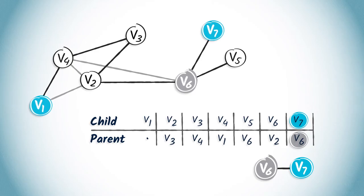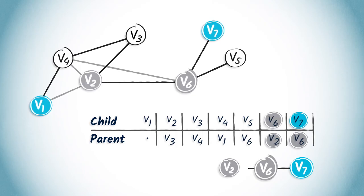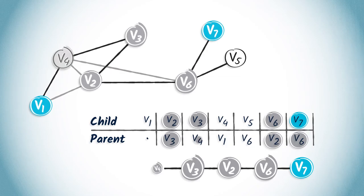By reading the entries corresponding to each predecessor, you'll eventually reach the starting position V1. So, in our example, the next step is to identify the entry corresponding to V6, which is V2. By continuing like this, we obtain the path V7, V6, V2, V3, V4, V1.